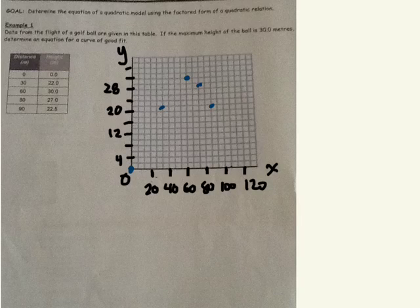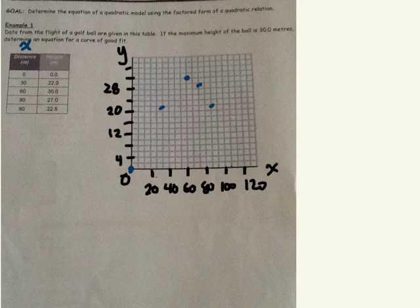Okay, so in this question we're given data about the flight of a golf ball from the table. X represents the distance that the ball is traveling and Y is the height of the ball after they hit it.